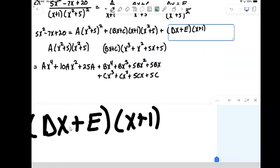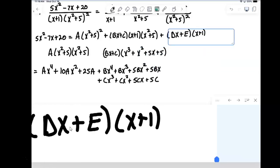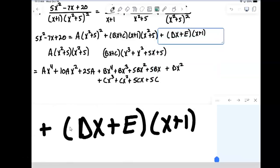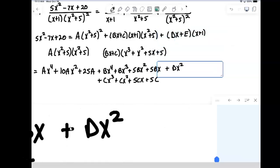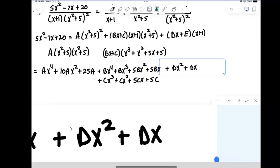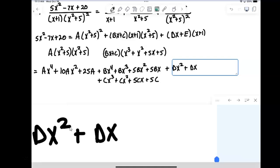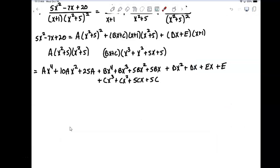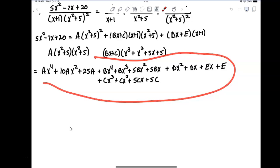And then finally, the last one there. We have to multiply out dx plus e times x plus 1. So dx times x will be plus dx squared, dx times 1 will be plus dx. And then e distributing through, e times x will be plus ex, plus e. Okay, so now that is a huge massive mess. So what I'm going to do is get my highlighter out and start equating coefficients.